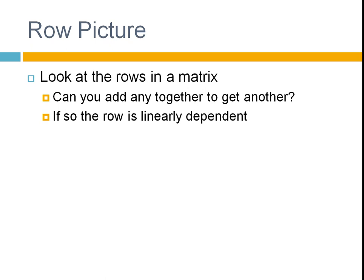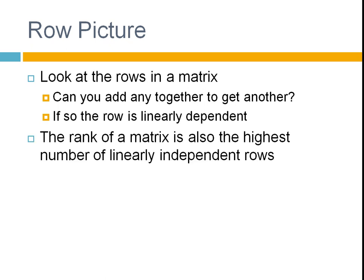That's a way that you can think about this. And the use of this is that the rank of the matrix, there's lots of different definitions for the rank of the matrix. But one of them is that the rank of the matrix is the highest number of linearly independent rows. So if one of the rows was linearly dependent and the other two were linearly independent, then you would have a rank 2 matrix.